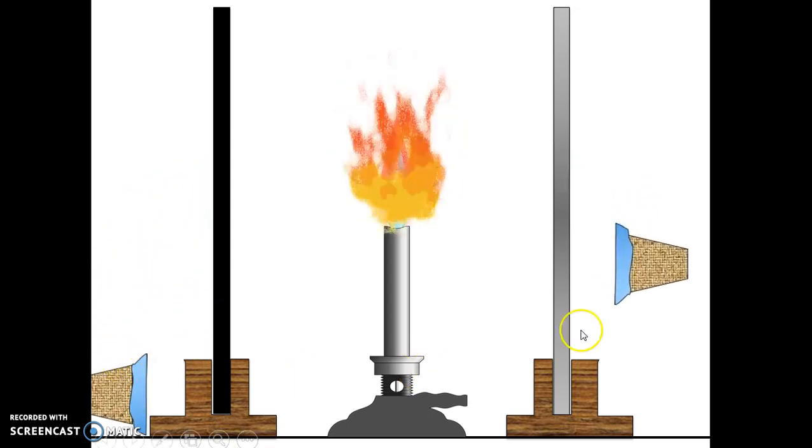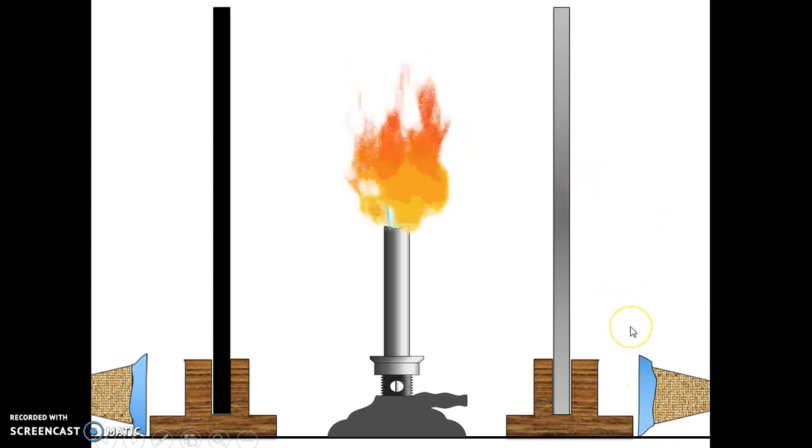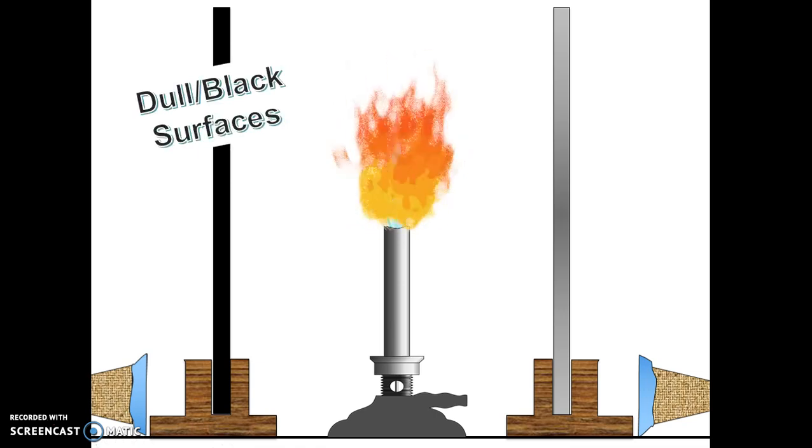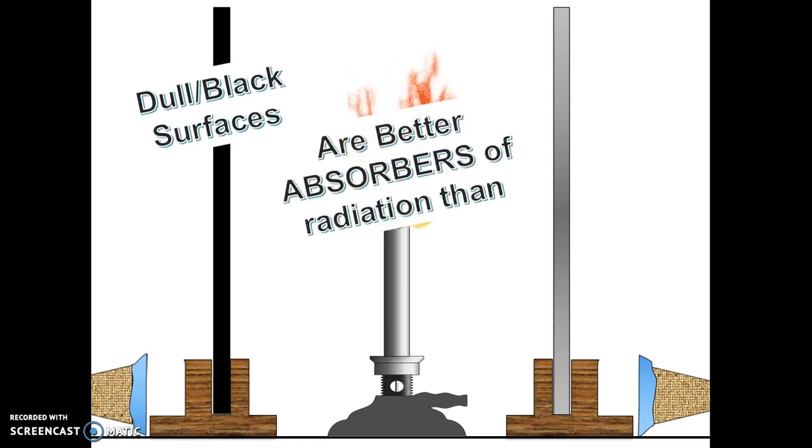You can see this actually falls down first and the other one, the silver one, actually melts a little bit later. So what does this actually show us? Basically just shows that the dull black surfaces are better absorbers of radiation than shiny silver surfaces. That's it, simple experiment we did here.